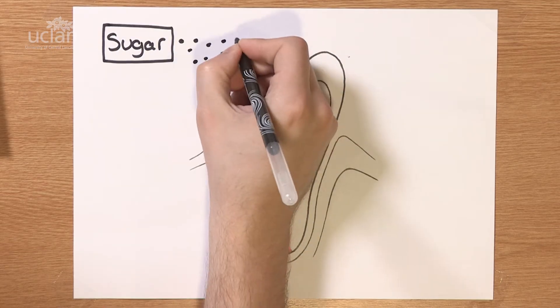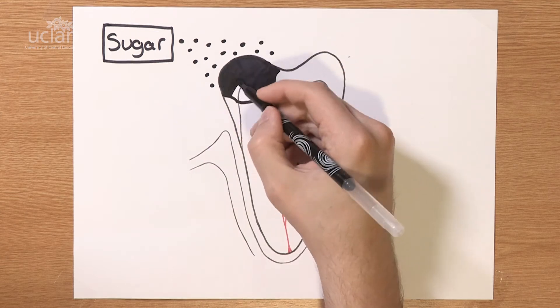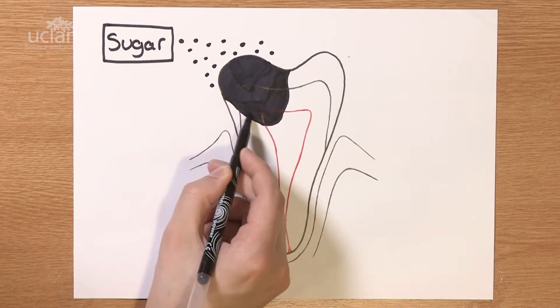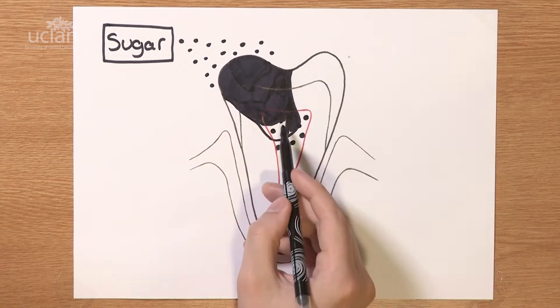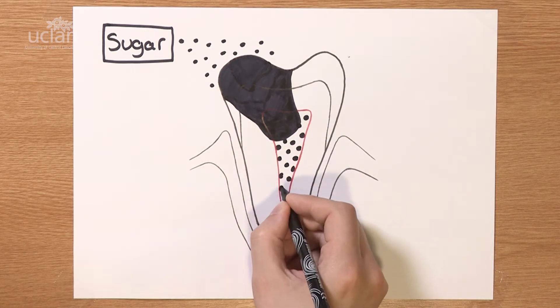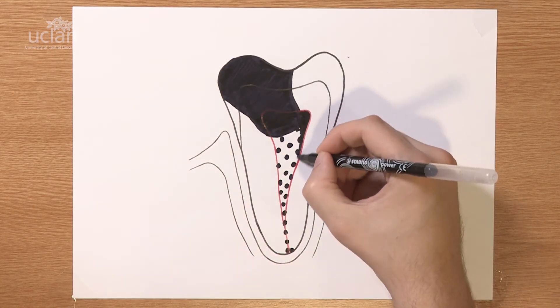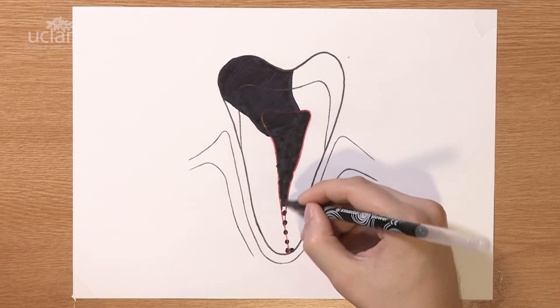But if left untreated, this cavity will get bigger and bigger and deeper until it breaks through into the nerve. This causes the nerve to die and become infected.